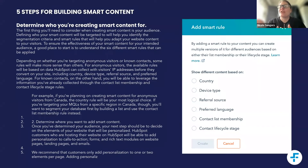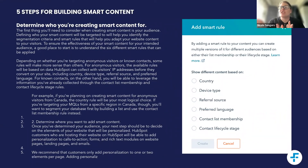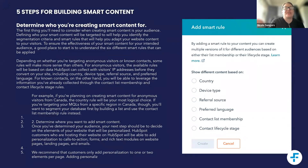Depending on whether you're targeting anonymous visitors or known contacts, some rules will make more sense than others. Location-based rules could be based on a CRM property, but could also be based on IP address and known location — just remembering that IP address is not the most reliable for country. Anyone using a static IP or a business-based IP could appear to be in a different country from where their IP address is based. Things like contact list membership, where a person has expressly given information, are more reliable.